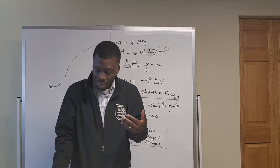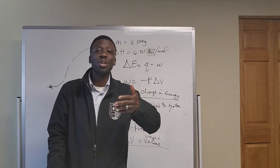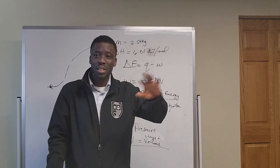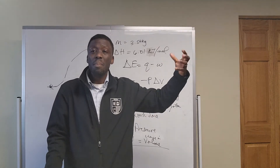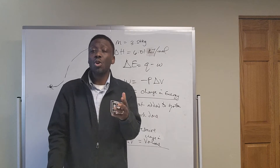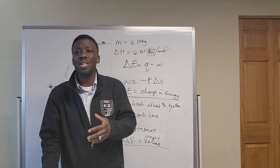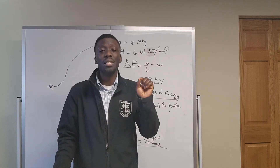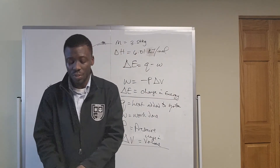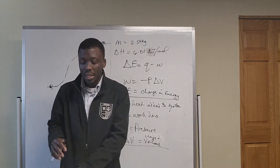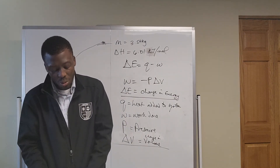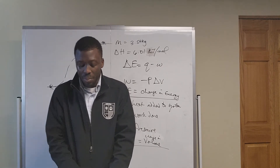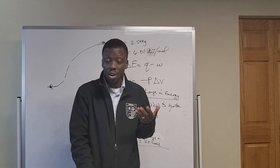Entropy is the measure of disorderliness of a system. If there's high entropy, like someone's room is disordered, we say there's high entropy. If things are in order, there's low entropy. Generally speaking, things move into a state of disorderliness — it takes energy to make things orderly. Entropy deals with the state of disorderliness of a system. The second law of thermodynamics deals with entropy. Entropy is the measure of disorder, and its units are joules per kelvin.